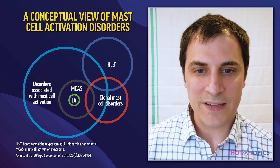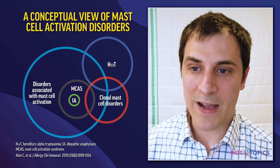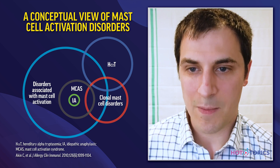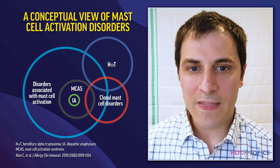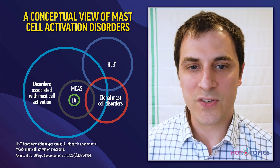The red circle represents clonal mast cell disorders — systemic mastocytosis, including all its variants. Finally, up in the top right is hereditary alpha tryptosemia, a new condition discovered in 2016 that also presents with an elevated tryptase and is very important to differentiate from systemic mastocytosis.